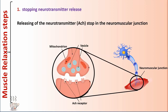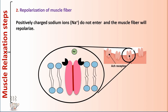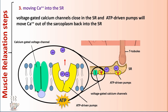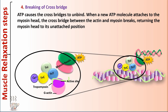Muscle relaxation steps. Step 1: Stopping neurotransmitter release. Releasing of the neurotransmitter acetylcholine stops at the neuromuscular junction. Step 2: Repolarization of muscle fiber. Positively charged sodium ions do not enter and the muscle fiber will repolarize. Step 3: Moving calcium into the SR. Voltage-gated calcium channels close in the SR and ATP-driven pumps move calcium out of the sarcoplasm back into the SR. Step 4: Breaking of cross bridges. ATP causes the cross bridges to unbind. When a new ATP molecule attaches to the myosin head, the cross bridge between the actin and myosin breaks, returning the myosin head to its unattached position.